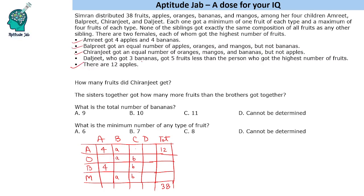Daljeet got 3 bananas and 5 fruits less than the person who got the highest number of fruits. Let us say Daljeet's total is x, so the highest total is x plus 5. Two females each got the highest number of fruits, so two people get x plus 5 and Daljeet gets x fruits. Together those three account for 3x plus 10, and there is one more person with y fruits.